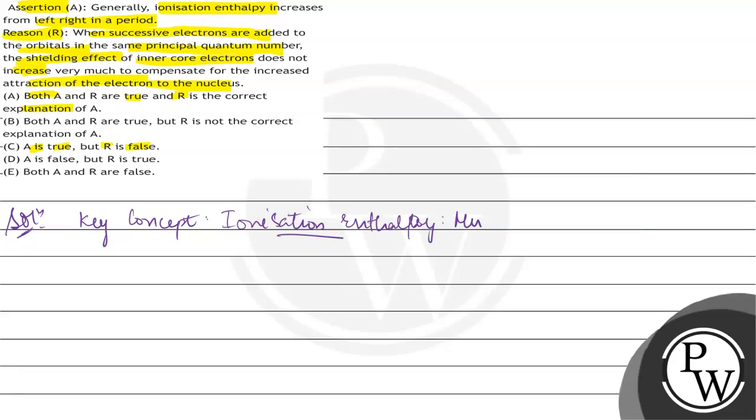Ionization enthalpy is the minimum energy required to eliminate or to remove the outermost electron from the outermost shell.